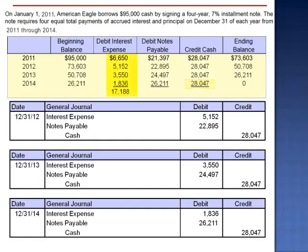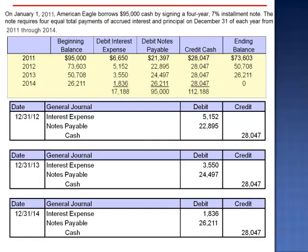Total interest expense for the four years is $17,188. Total reduction in principal is $95,000. Total credit to cash is $112,188. Interest expense is the difference between what was borrowed, $95,000, and the amount repaid, $112,188.